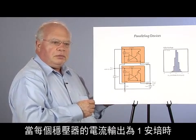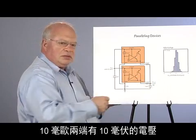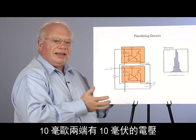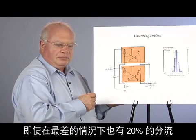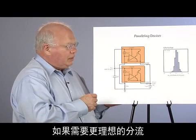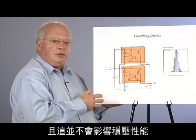At one amp output per regulator, two amps total, there's 10 millivolts across the 10 milliohms. That gives, worst case, 20% current sharing. If you want better current sharing, you can take that to 20 or 30 milliohms and still have very good regulation.